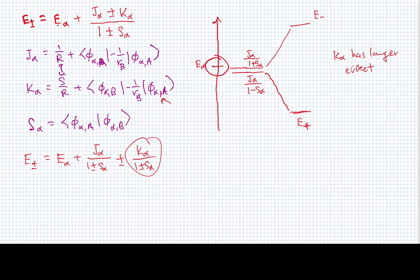It's not exactly true that the average of the two energies equals the energy of the atomic orbital, but it's approximately true and we tend to draw it that way. I've introduced this because we're going to take it a step further in subsequent videos and talk about what the full set of energy levels looks like for a homonuclear diatomic.